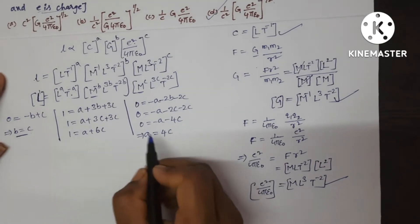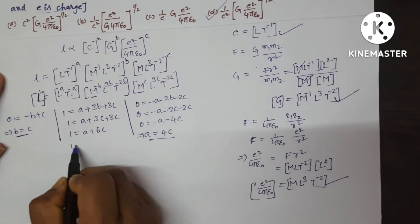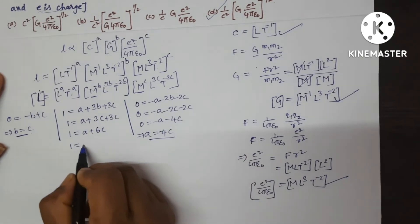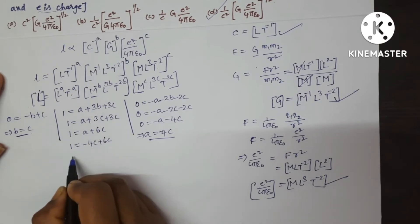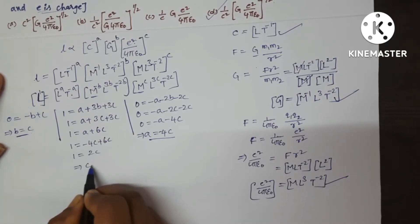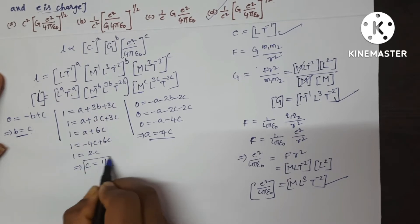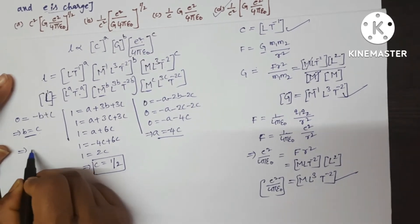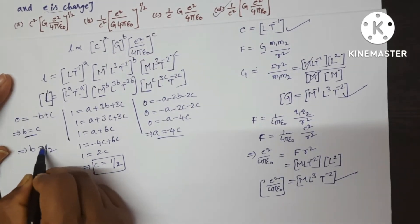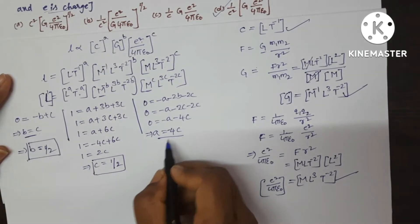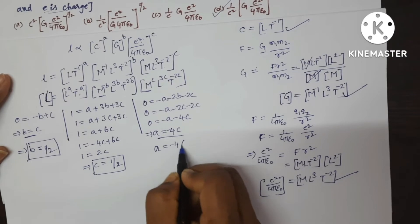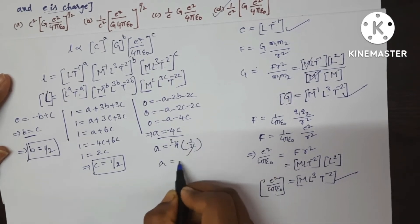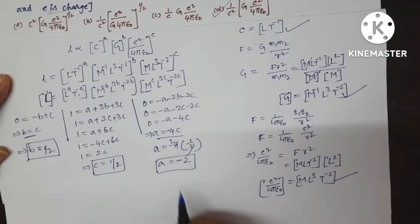With C = 1/2, we get A = −4 × (1/2) = −2. And since B = C, B = 1/2. So we have A = −2, B = 1/2, and C = 1/2.